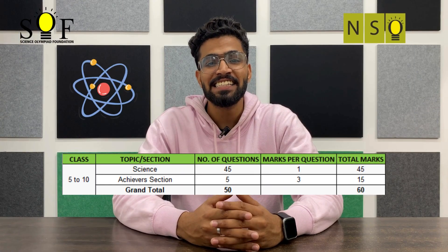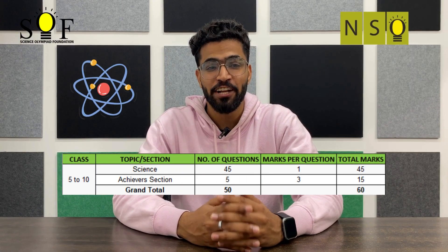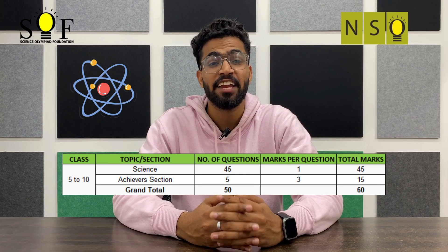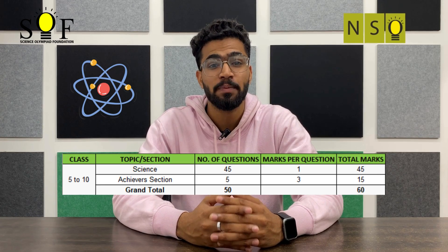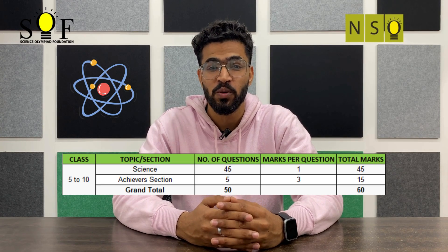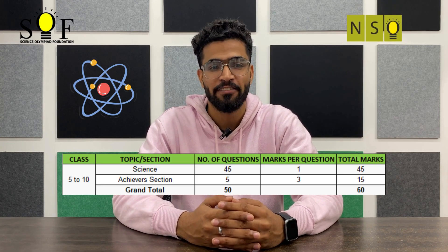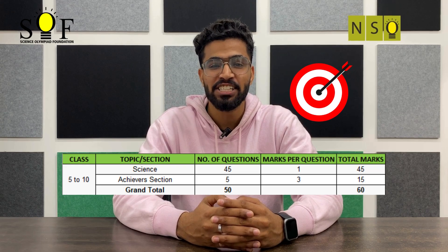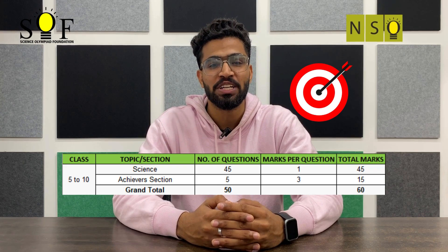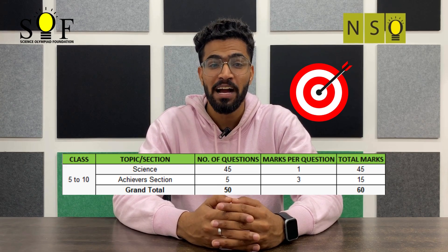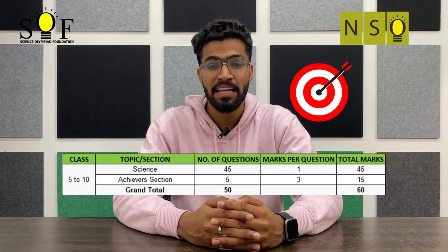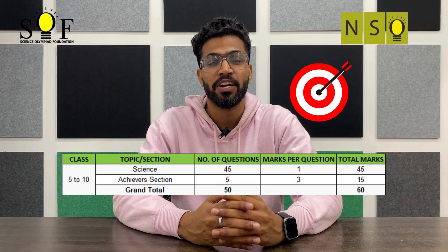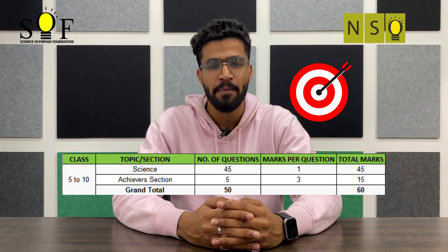For classes 5 to 10, Science section will have 45 questions carrying 1 mark each, making this section a total of 45 marks. Achievers section will have 5 questions carrying 3 marks each, making this section a total of 15 marks.